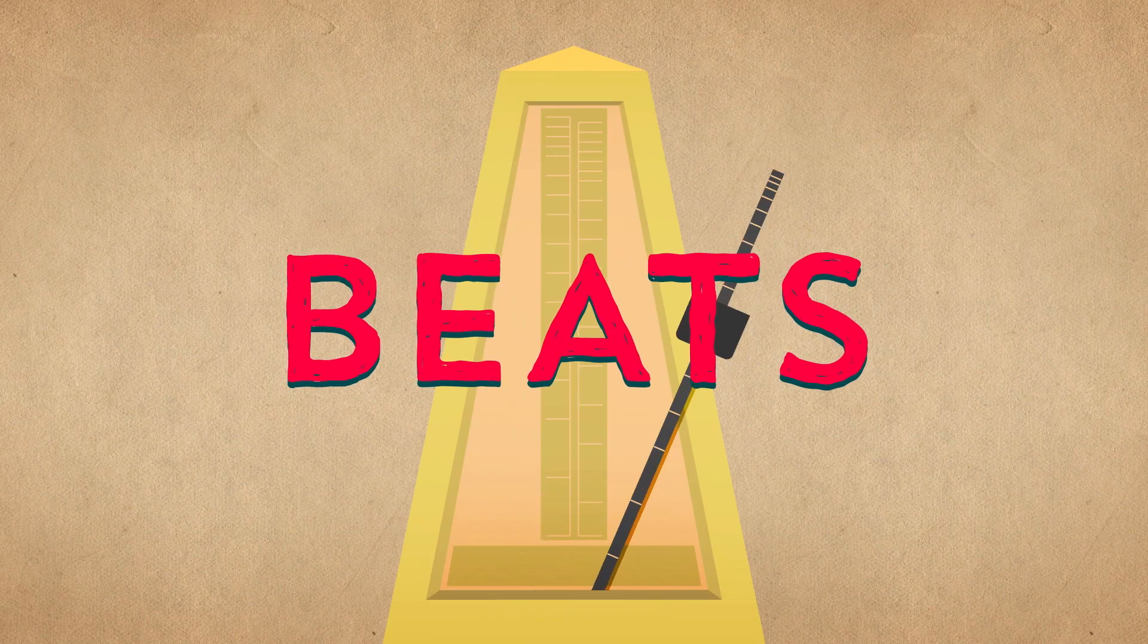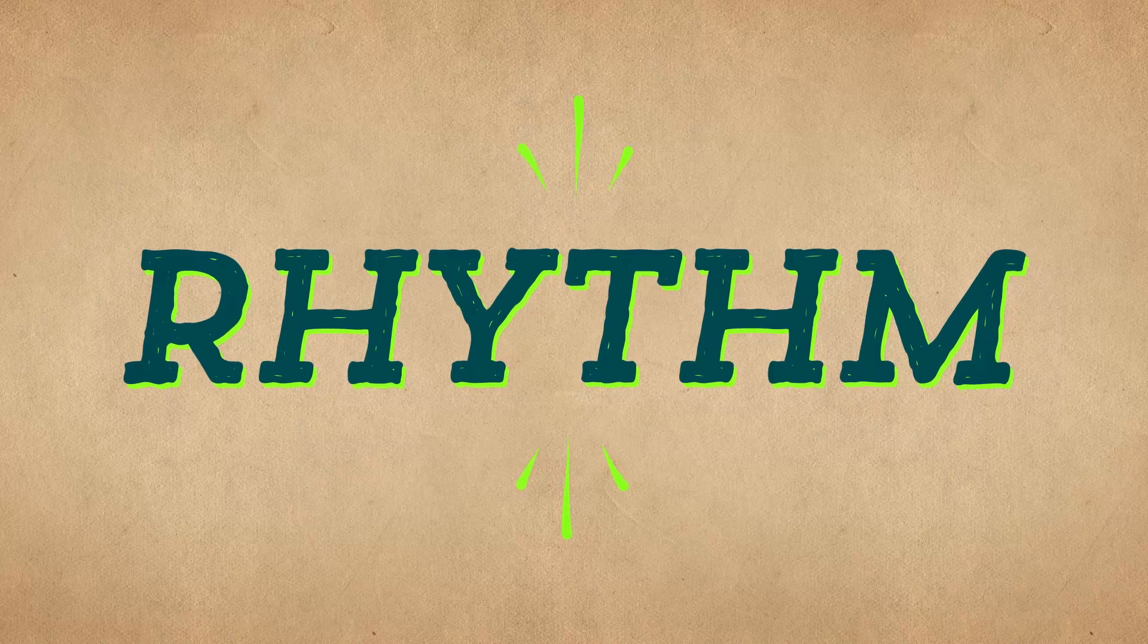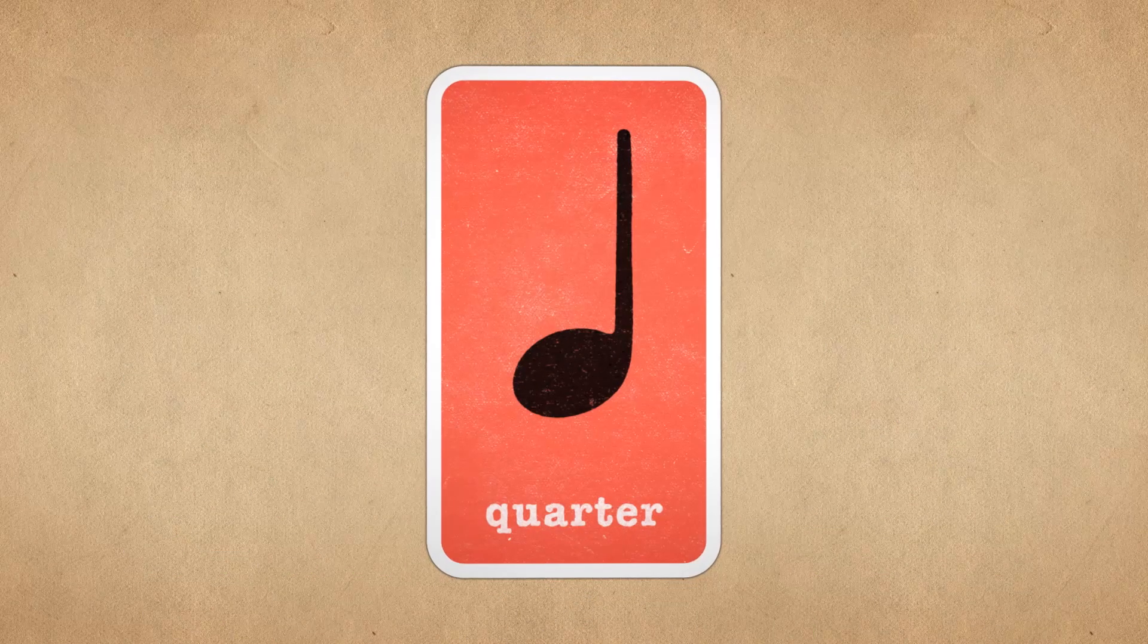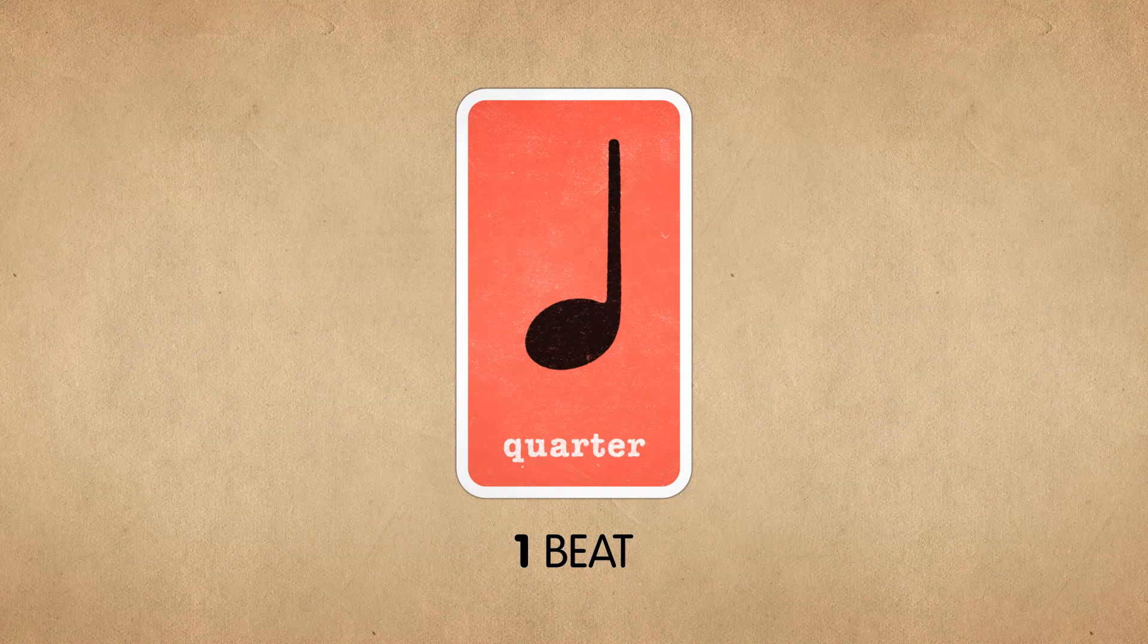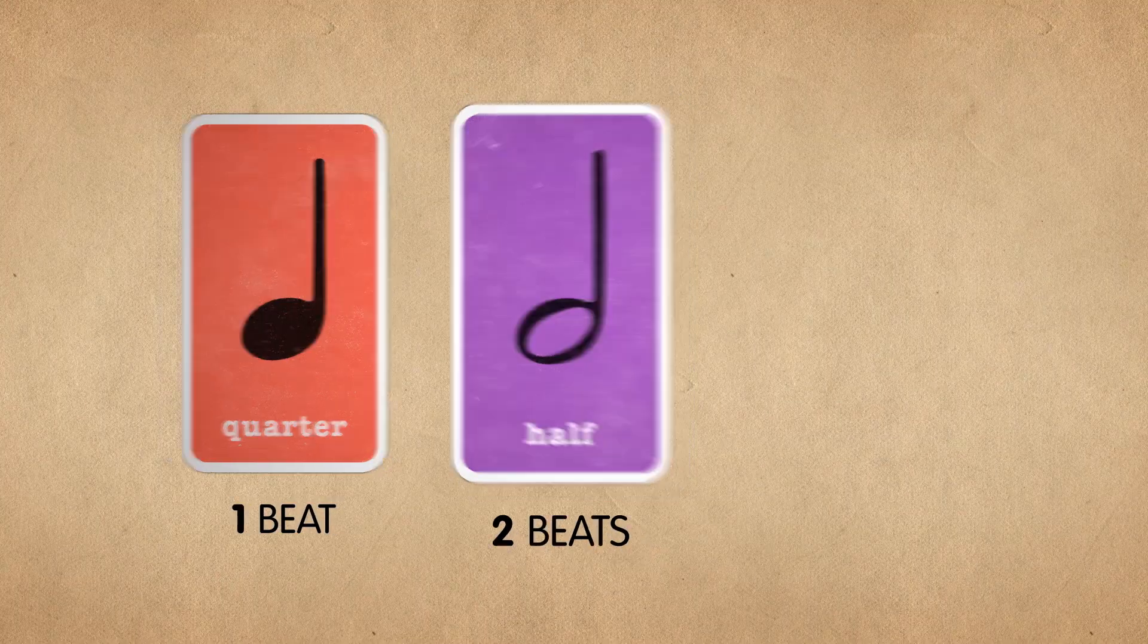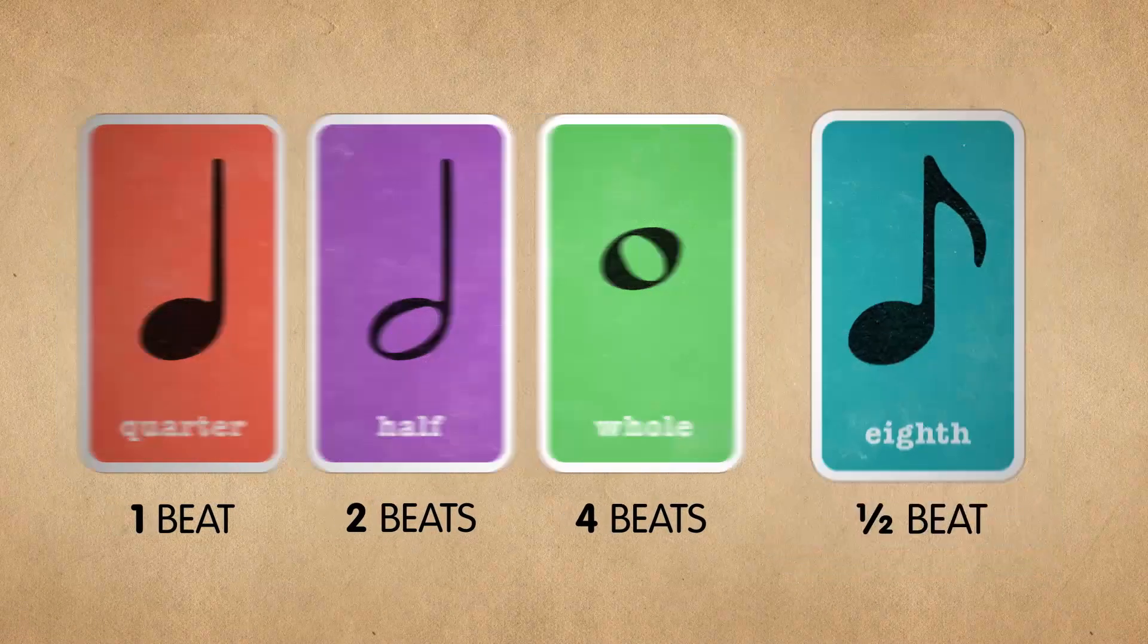With a steady beat as a foundation, we can start adding rhythm to our pitches, and that's when music really starts to happen. This is a quarter note. It's the most basic unit of rhythm, and it's worth one beat. This is a half note, and it's worth two beats. This whole note here is worth four beats, and these little guys are eighth notes, worth half a beat each.